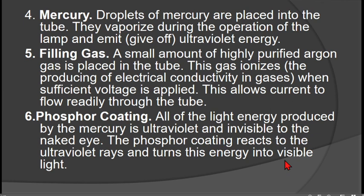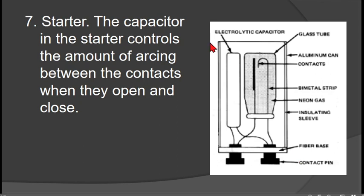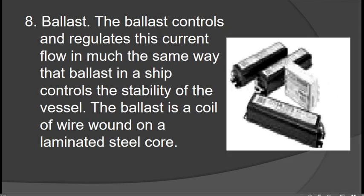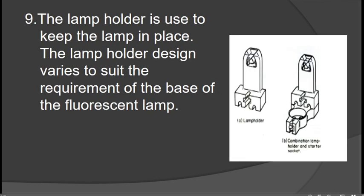The starter contains a capacitor that controls the amount of arcing between the contacts when they open and close, protecting the fluorescent lamp from sudden voltage changes. The ballast controls and regulates the amount of current flowing through the lamp, protecting it from burning out, especially the cathodes. The lamp holder is where the tube is held in place.